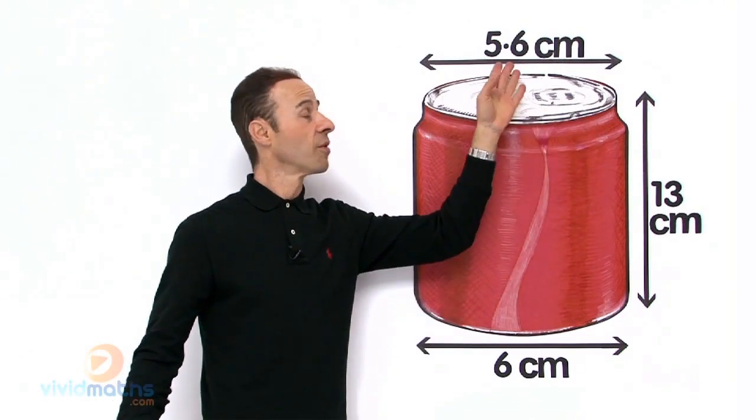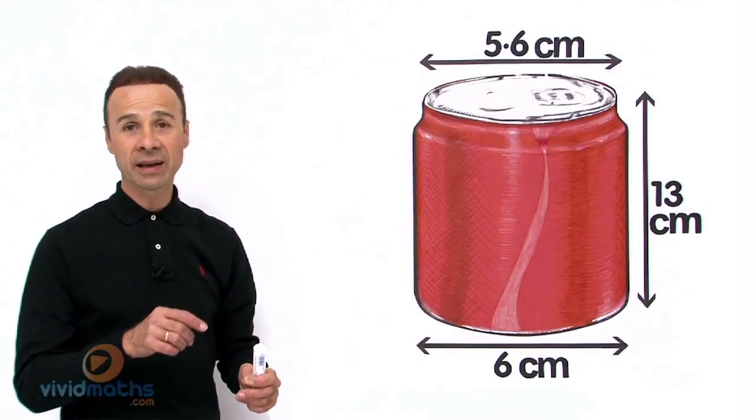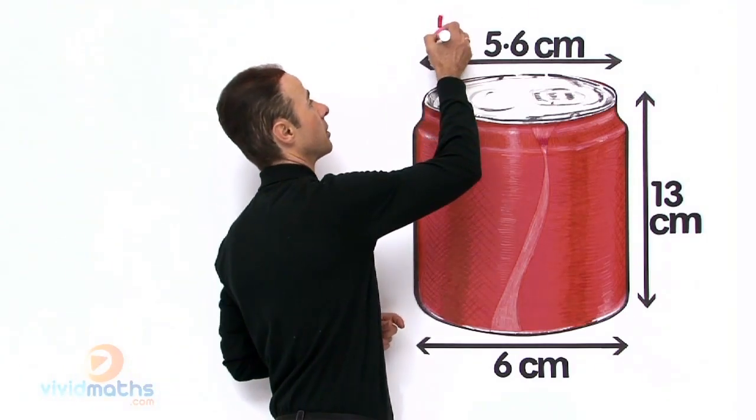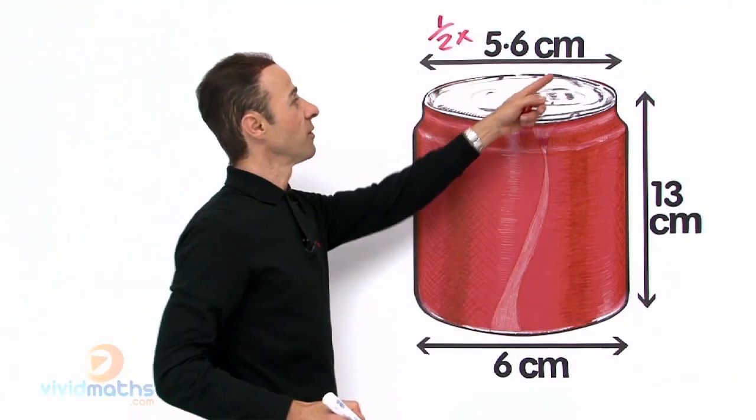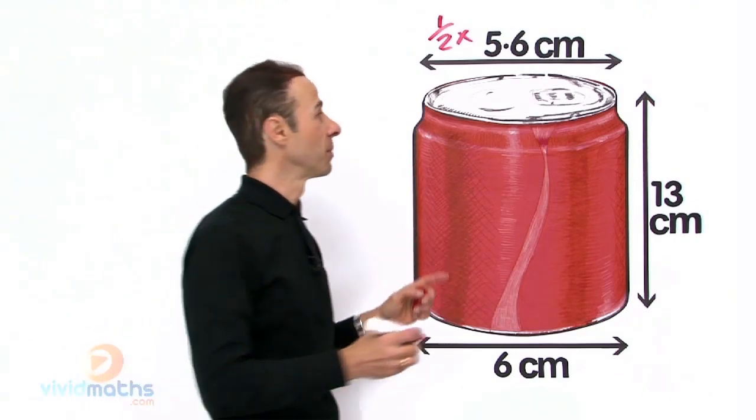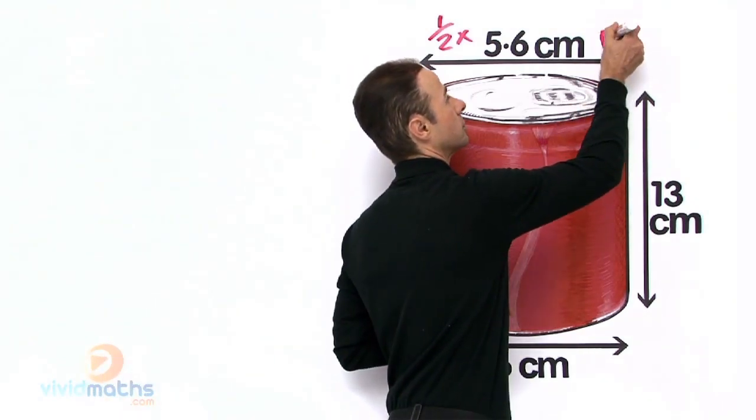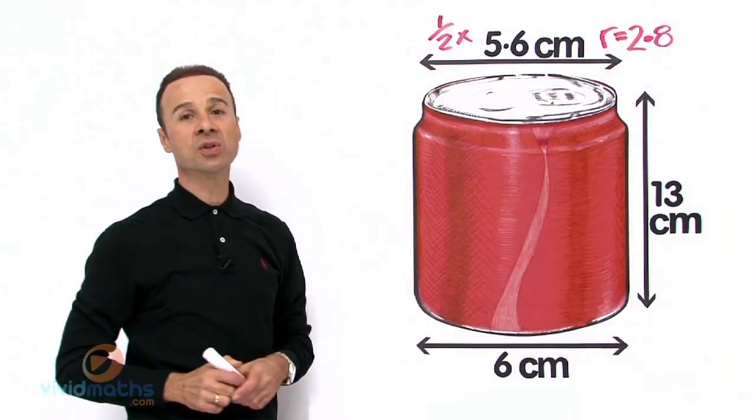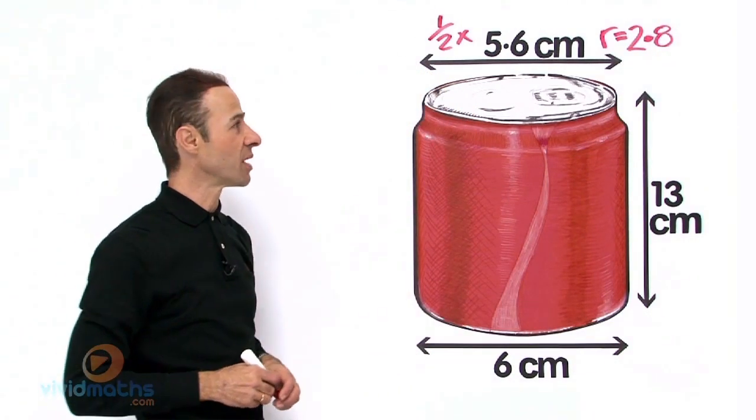Let us halve that, so 5.6cm in our calculator. Half of 5.6 multiplied by half, that is going to give us a result of radius for the top. So the top is going to be a radius of 2.8cm.